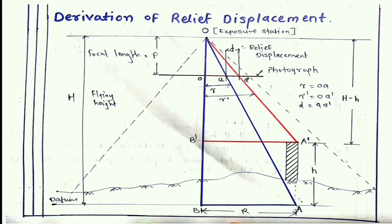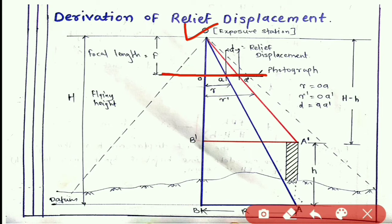Now let us look at the derivation of relief displacement and its considerations. Here O is the exposure station — the location from which we take the photograph from the airplane or aircraft. This is the photograph, also called photo film or film position. This is the focal length, which is the vertical distance between the exposure station and the photo position.